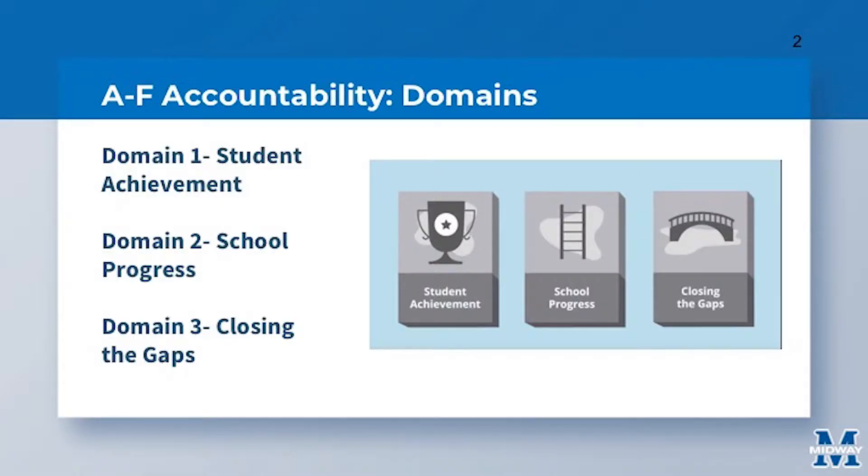Well great. How do you think we could go about doing that in a way that can make this complicated system easy to understand? Well let's look. School districts and campuses are given an overall letter grade based on the performance in three different domains: student achievement, student progress, and closing the gaps.